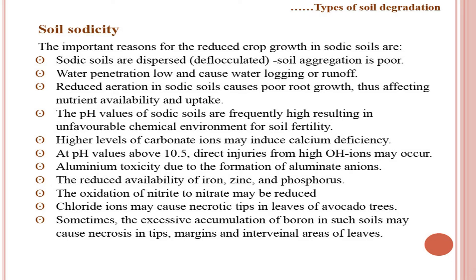Reduced aeration in sodic soils causes poor root growth, affecting nutrient availability and uptake. The pH of sodic soils is frequently high, creating an unfavorable chemical environment for soil fertility. Higher levels of carbonate ions may induce calcium deficiency. At pH above 10.5, direct injury from high hydroxyl ions may also occur. Aluminum toxicity due to formation of aluminate ions can also happen. The reduced availability of iron, zinc, and phosphorus is always a concern in sodic soils. The oxidation of nitrite to nitrate may be reduced, and excess boron in such soils may cause necrosis in the tips, margins, and interveinal areas of leaves.